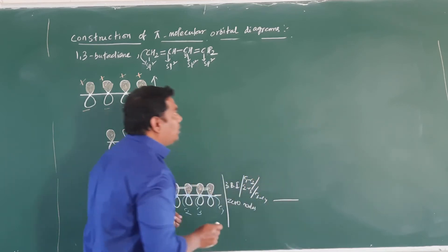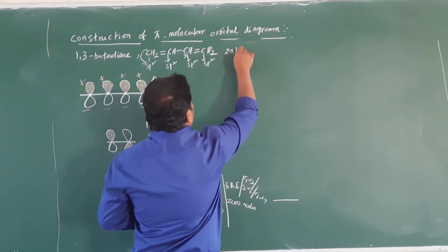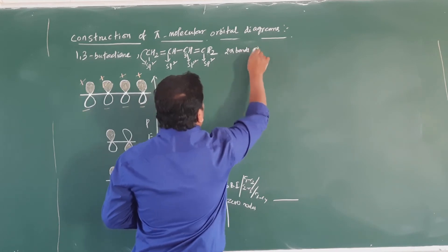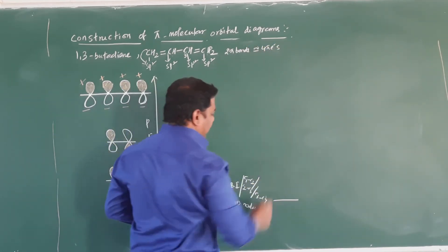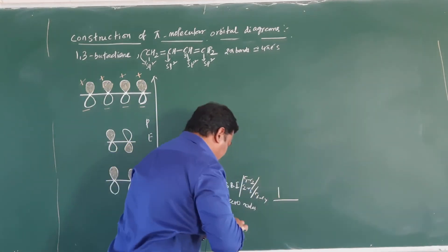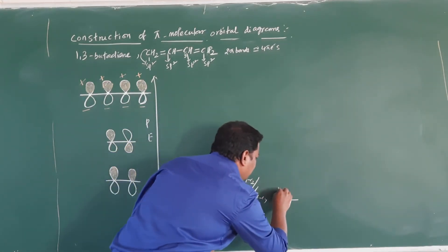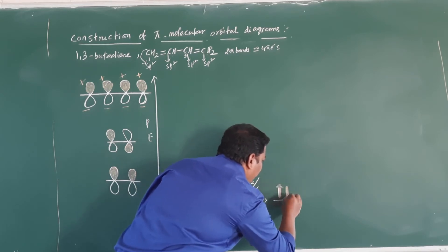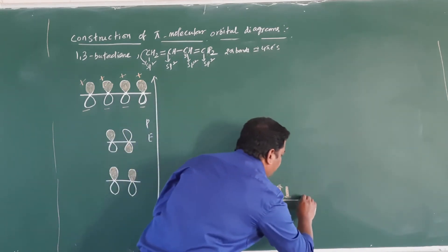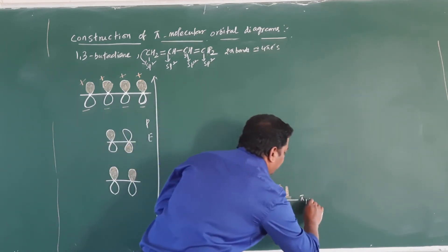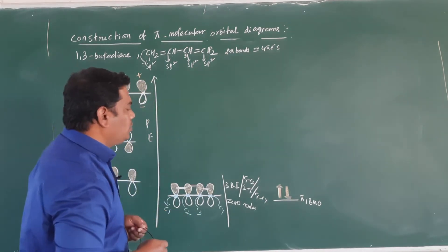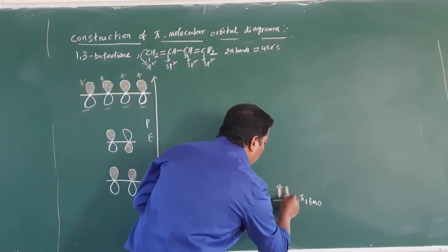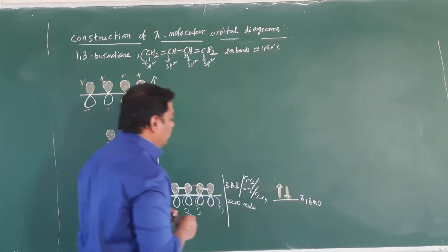In 1,3-butadiene there are 2 pi bonds, which means 4 pi electrons total. The first 2 pi electrons are placed into this lowest energy level, pi1, which is a bonding molecular orbital. The 2 electrons are placed into the lower energy level only.